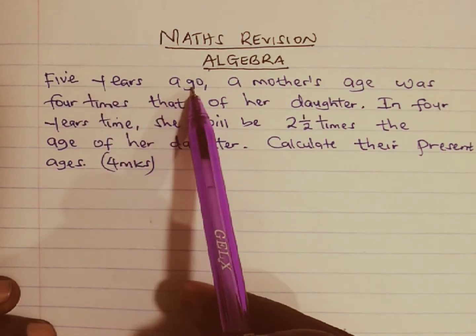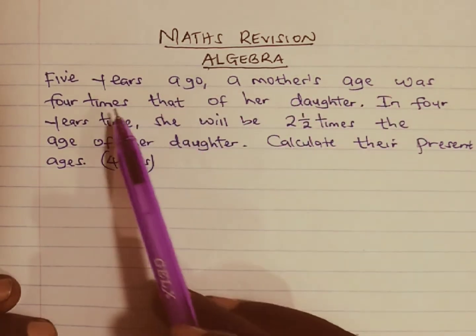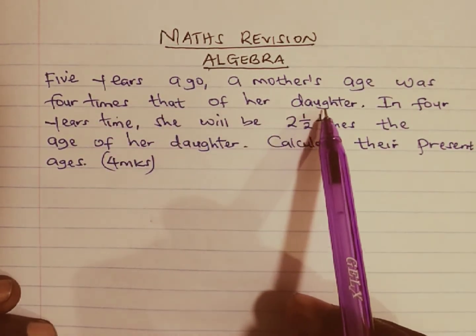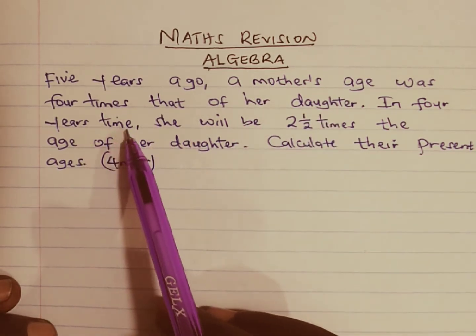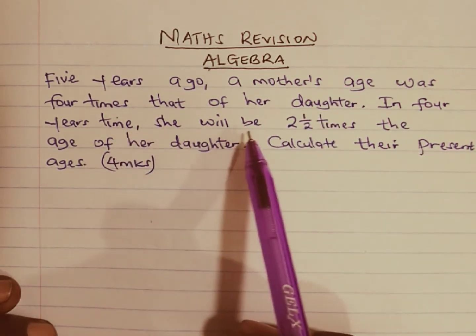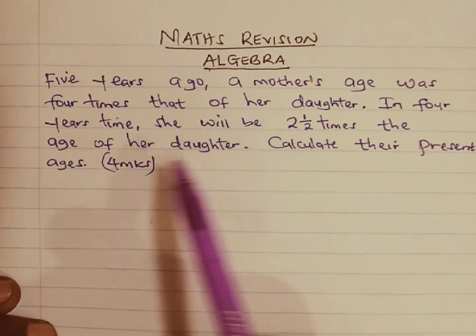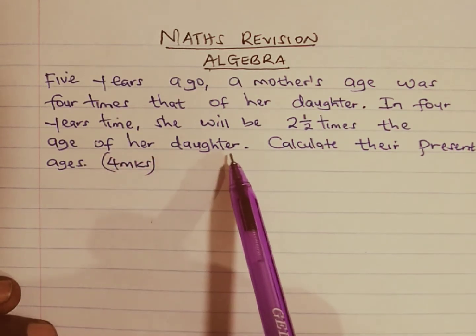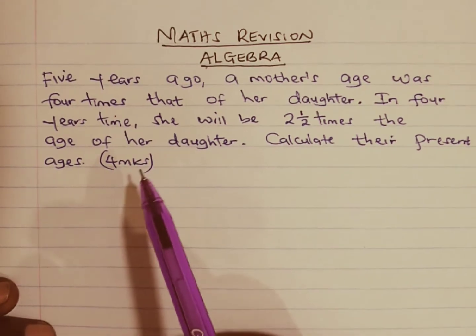Five years ago, a mother's age was four times that of her daughter. In four years' time, she will be two and a half times the age of her daughter. Calculate their present ages.